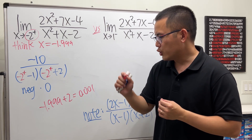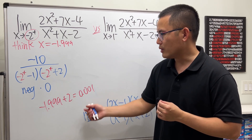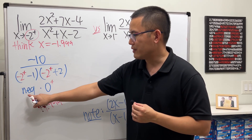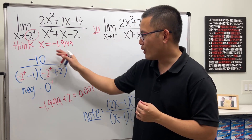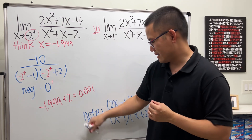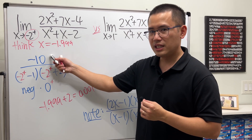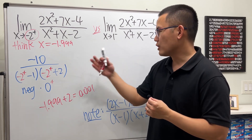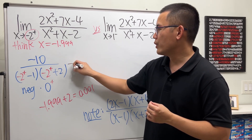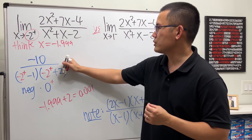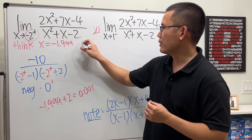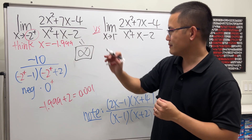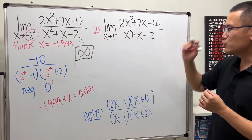So the denominator has a negative in front, but the second factor is positive. Altogether: the top is negative, divided by (negative times positive), which is negative — so negative divided by negative is positive. This entire expression approaches positive infinity.